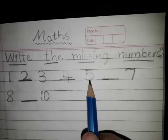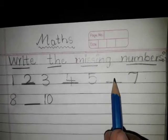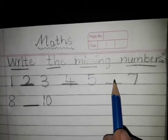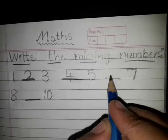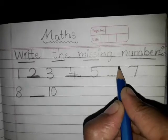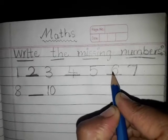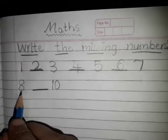Now tell me, between 5 and 7, which number is missing here? Very good, number 6. Now here we will write number 6. Now next,